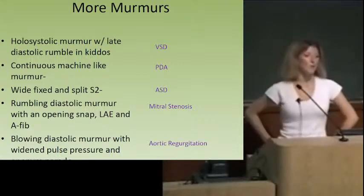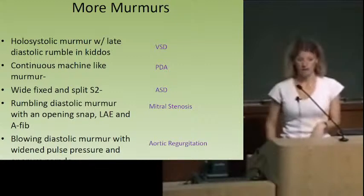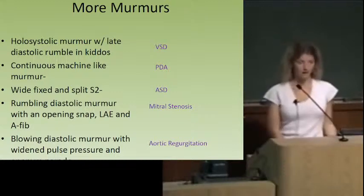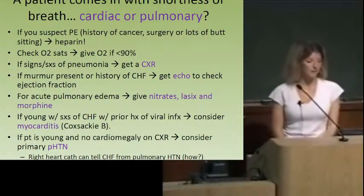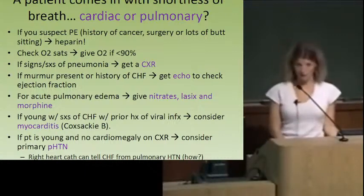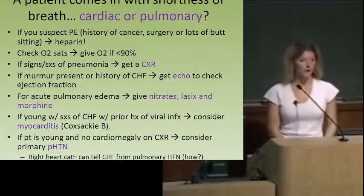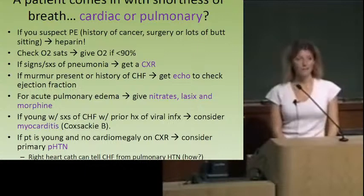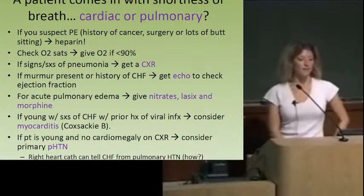When a patient has shortness of breath, it can be cardiac or pulmonary. If you suspect a pulmonary embolus, give heparin right away before your workup — heparin first is always the right answer if you really suspect PE. Always check the O2 sat. If you suspect pneumonia — characteristic breath sounds, egophony — get a chest x-ray. Anytime someone with CHF has a murmur, get an echo. For acute pulmonary edema, the trifecta of medications is nitrates, Lasix, and morphine.